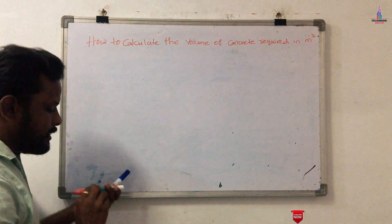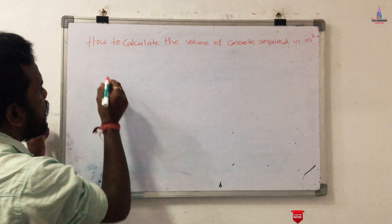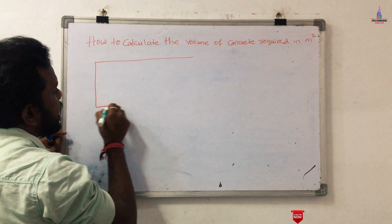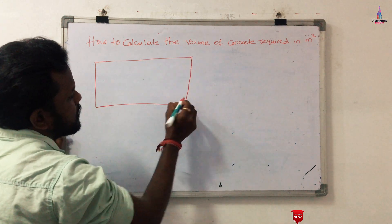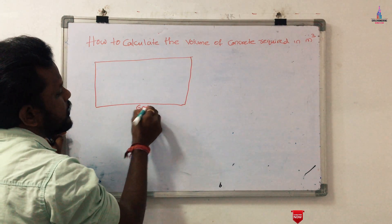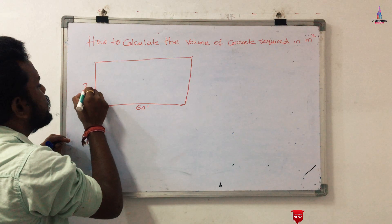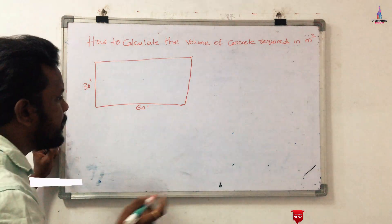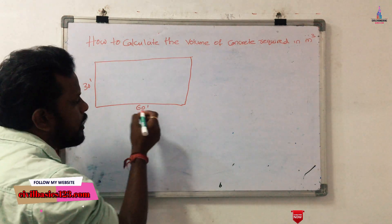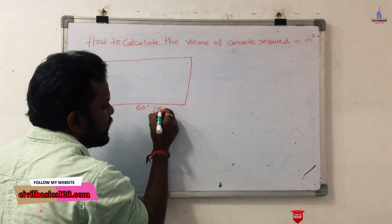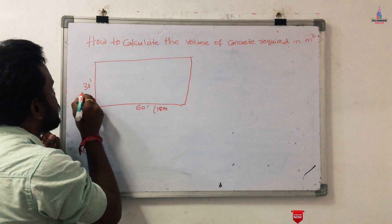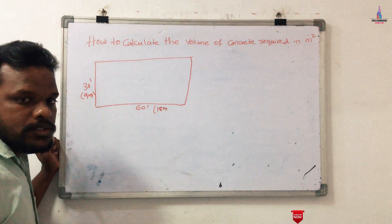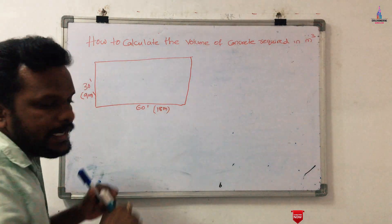For this example I am considering a building structural model consisting of a slab approximately 60 feet in length and 30 feet in width. If you convert these values, 30 feet and 60 feet become approximately 18 meters and 9 meters respectively. For simple calculation I am taking 18 meters and 9 meters.